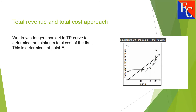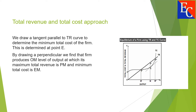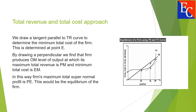We draw a tangent parallel to the total revenue curve to determine the minimum total cost of the firm. This is determined at point A. By drawing a perpendicular, we find that the firm produces OM level of output at which its maximum total revenue is PM and minimum total cost is EM. In this way, the firm's maximum total supernormal profit is PE. This would be the equilibrium of the firm.